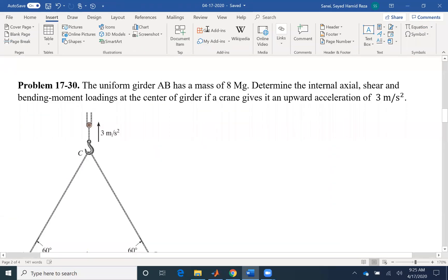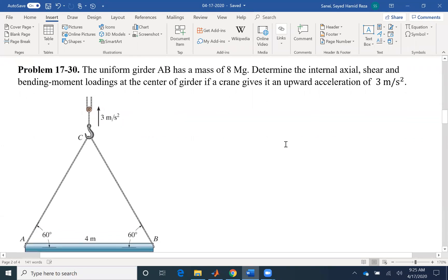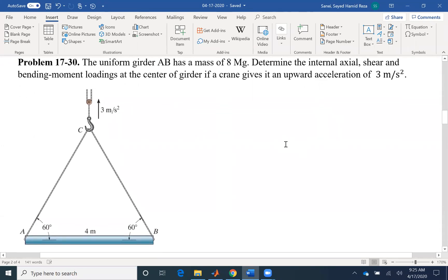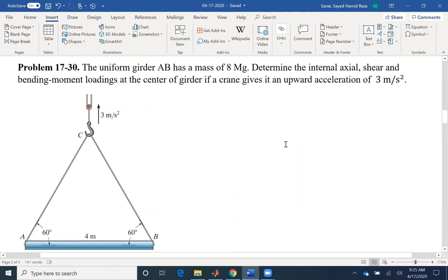Hello everyone. We are going to solve problem 30 of chapter 17. The uniform girder AB has a mass of eight megagram, which means 8,000 kilograms. Determine the internal axial, shear, and bending moment loadings at the center of the girder if a crane gives it an upward acceleration of 3 meters per second squared.